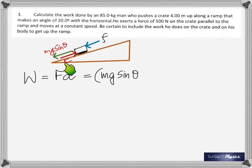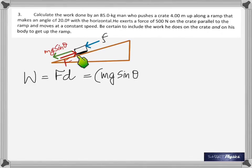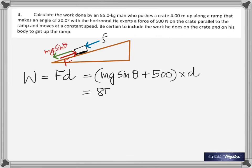To move the crate, he must apply a force equal to the sum of mg·sinθ and friction. Friction has already been given, so it's a force of 500 newtons times d. We don't need cosθ here because he is pushing parallel to the ramp.